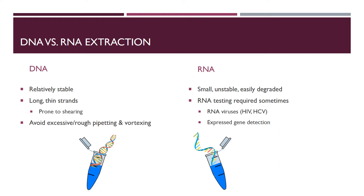There are differences in DNA and RNA, and that also means there will be differences in the extraction techniques. DNA is relatively stable, but it exists in long thin strands which can be prone to shearing, so it's important to avoid excessive or rough pipetting or vortexing. RNA, on the other hand, is small, fairly unstable, and easily degraded. RNases degrade RNA, and RNases are everywhere, so RNA extraction requires extra care. However, it is sometimes necessary — for testing RNA viruses like HIV or HCV, or for expressed gene detection.